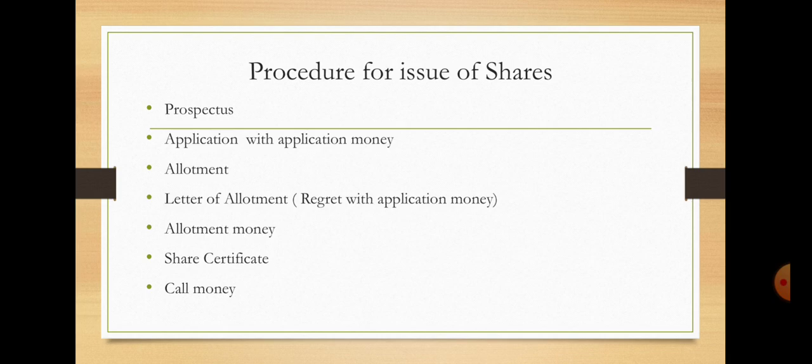After allotting the shares, the shareholders must be notified through a letter of allotment to inform them about the allotment of shares. Then, after paying all the allotment money — all application and allotment money — they receive a share certificate from the company. After receiving the share certificate, the shareholder must pay their remaining call money as installments when the company calls it up.